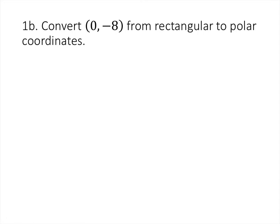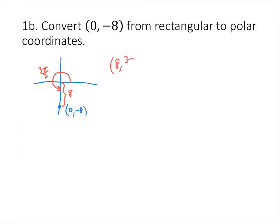For the next problem, we're again converting from rectangular to polar coordinates. Since the point (0, -8) lies on the negative y-axis, we can convert without the formulas. The angle to reach that point is 3π/2 (the same as 270°), and the distance r from the origin is 8. So one way to write this in polar coordinates is (8, 3π/2).